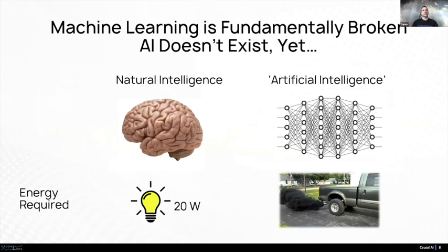So we have a problem, and here's one of the symptoms — not the cause, but the symptom. A human brain requires about 20 watts of energy to function — that's the equivalent of a light bulb. A deep neural network emits more CO2 in the training process than a diesel vehicle in its entire lifetime. And yet the human brain is still more generalizable than the artificial neural network that polluted our environment.